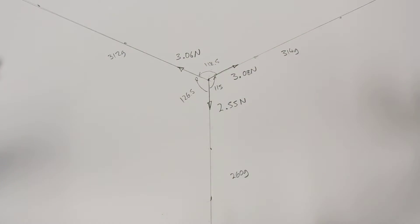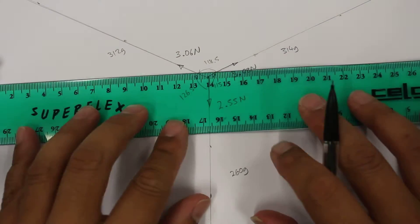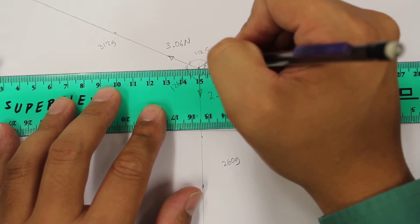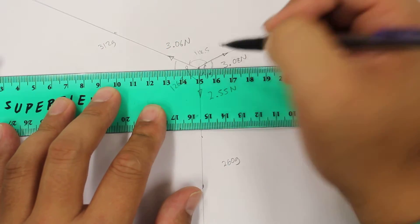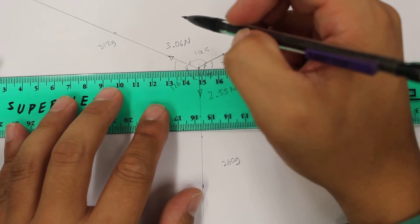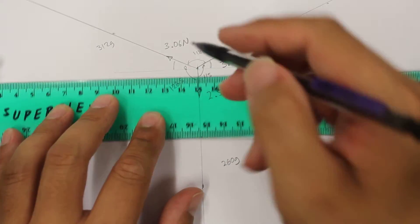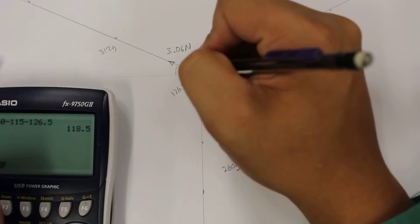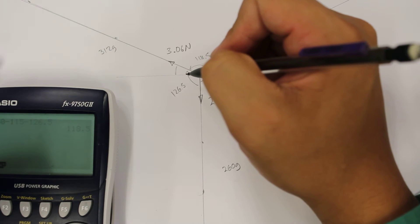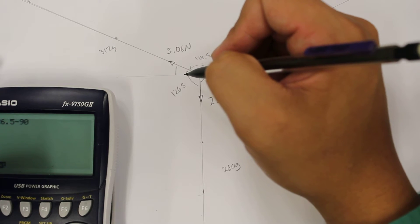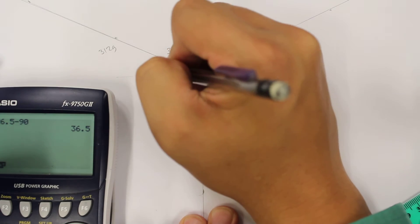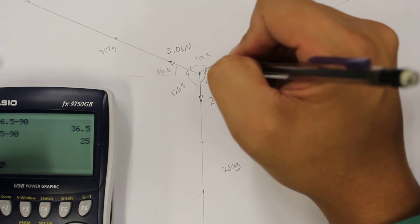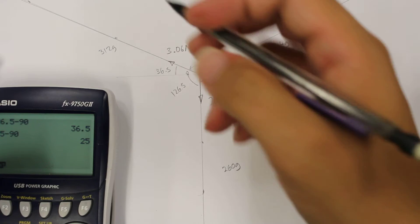Useful angles to know would be, if I was to draw a horizontal line across this section here, what this angle here would be and what this angle here would be. So simply we could just draw a horizontal line. If this is 126.5 going all the way around, we can just go 126.5 minus 90. So this angle here is 36.5, and this angle here will be 115 minus 90, so 25 degrees.